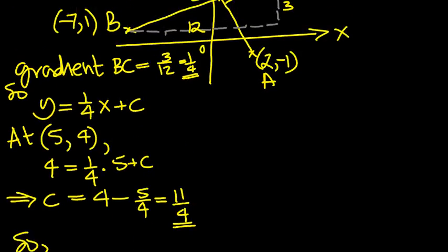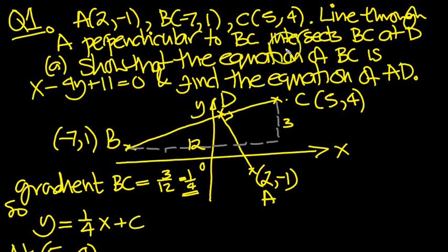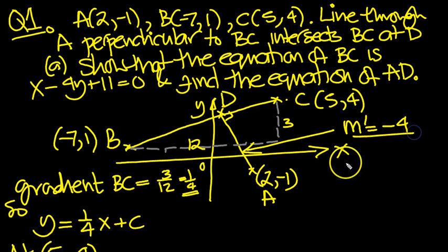Now let's go up and find out what else they wanted us to do in part A. So we've done, showed that this, we've got this equation. And find the equation of AD. So we need the equation of this line. Right, well we know the gradient because we know that it's perpendicular to this gradient, and we know that gradient. So this gradient, because this gradient over here is a quarter, this gradient here must be, 4 times a quarter is 1, so it's -4. So that has a gradient, which I'll just put in as an m dashed, equals -4.